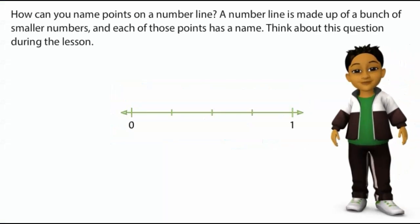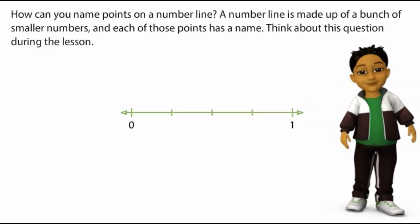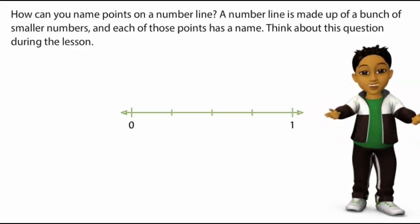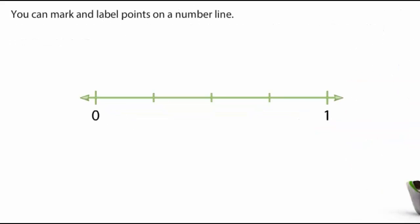How can you name points on a number line? A number line is made up of a bunch of smaller numbers, and each of those points has a name. Think about this question during the lesson. The arrows show that number lines go on forever. You can mark and label points on a number line.